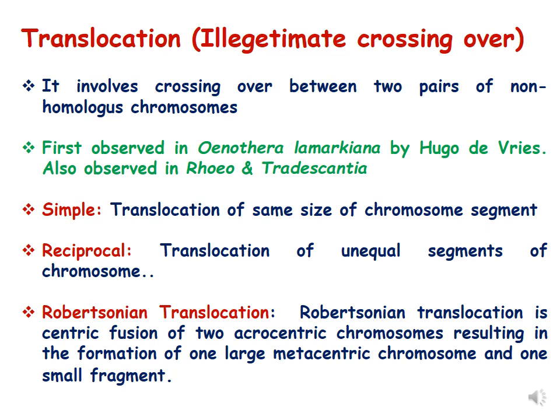Translocation was first observed in Oenothera lamarckiana by Hugo de Vries, and it is also observed in Rojo and Tradescantia. Translocation can be classified into types: simple translocation, when the exchanged chromosome segment is of the same size between non-homologous chromosomes; and reciprocal translocation, when translocation happens between non-homologous chromosomes but the exchanged segments are unequal in length.